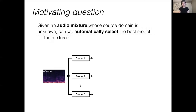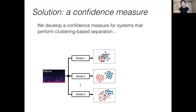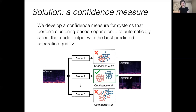So we were motivated by the question: given an audio mixture whose source domain is unknown, can we automatically select the best model for the mixture? To do this, we develop a confidence measure that can be applied to systems that perform clustering-based separation. Each of the three diagrams here represents clustered embedding spaces produced by the model. We apply this confidence measure to predict the separation quality for each model's output and select the separation with the highest confidence as the final output, effectively mediating among several source separation models to select the most appropriate model for the given mixture.